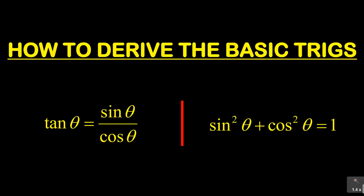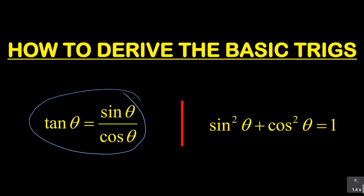Now getting back to the lesson, the first one I want to look at is how do we derive that tan θ is equal to sin θ over cos θ. Let us do that. Let me lay a few foundations here, and I'm going to start by using the trig ratios.